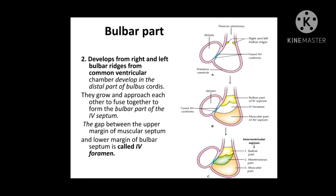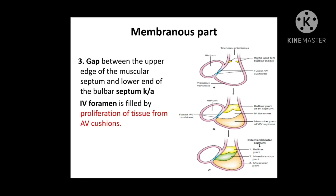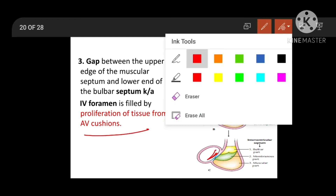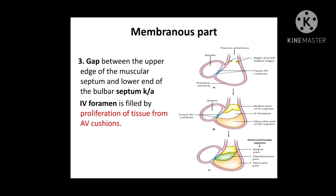The bulbar part develops from right and left bulbar ridges in the distal part of the bulbous cordis; these fuse in the midline forming the bulbar part of the IV septum, which grows downward. The gap between bulbar and muscular parts is called the interventricular foramen, which is filled by the membranous septum formed by proliferation of AV cushions.